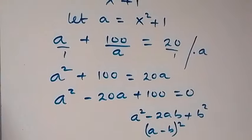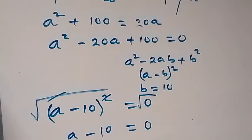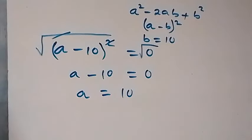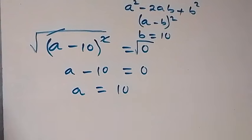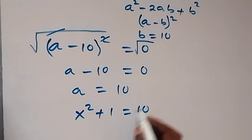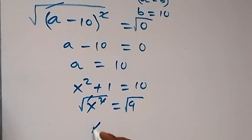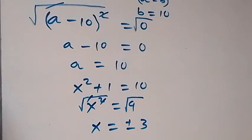Recall that we represented a as x squared plus 1. When we replace a with x squared plus 1, we have x squared plus 1 equals 10. Taking one from both sides gives x squared equals 9. Taking the square root on both sides gives x equals plus or minus 3.